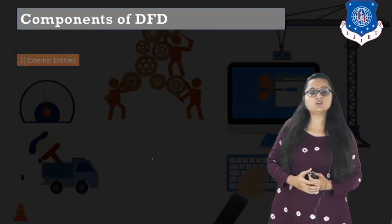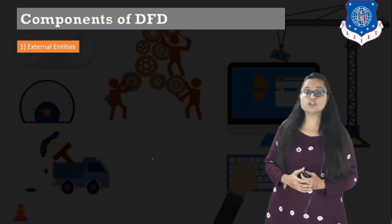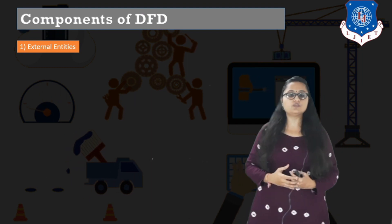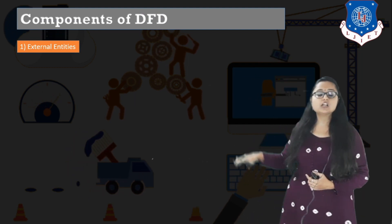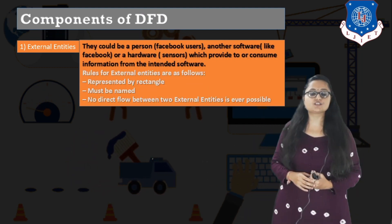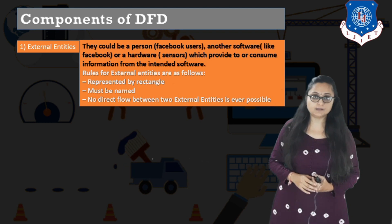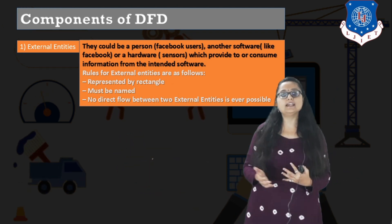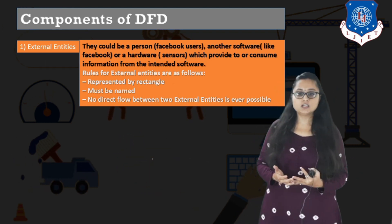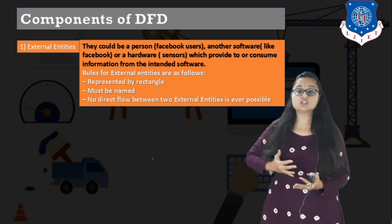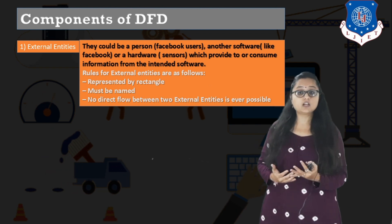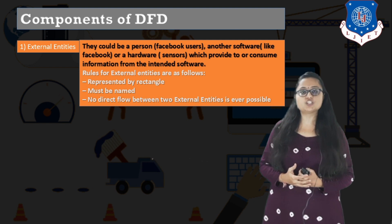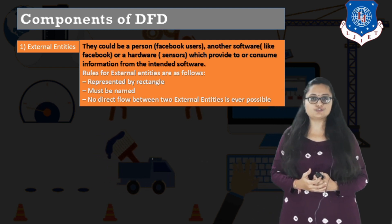Now let us study what are the different components, entities, or symbols associated with data flow diagram. The first symbol is external entity. An external entity can be any person, another software, or hardware which provides or consumes information from the intended software.